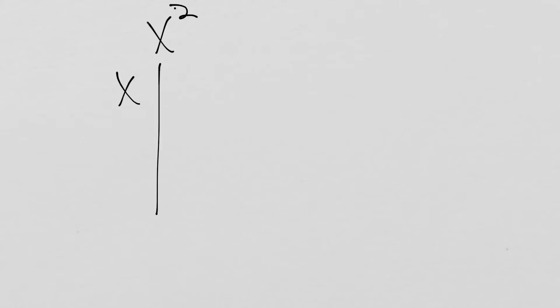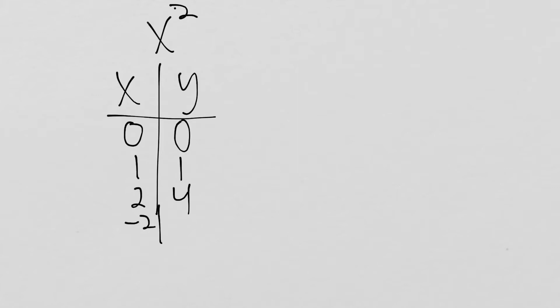Then we talked about function transformations. If I have my x squared function — actually, let's talk about graphs really quick. If I have my function x squared, I can make a table of my inputs and outputs. If x is 0, then y is 0. If x is 1, 1 squared is 1. If x is 2, 2 squared is 4. Negative 2 squared is also 4. Negative 1 squared is also 1. I can see these inputs and outputs are making coordinate points.